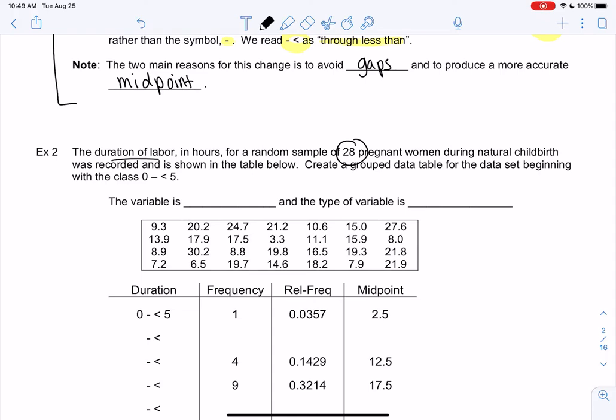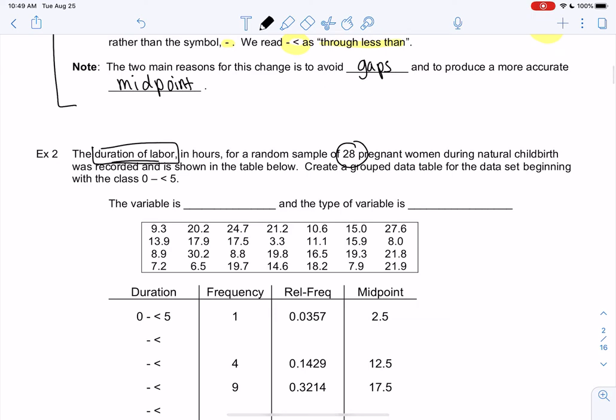First, our variable is the duration of the labor. That's what varies from person to person, that's what we're measuring. The difference in this one compared to the previous example is that the data is continuous. Labor doesn't have to be a full exact hour, it could be a half hour or 15 minutes. It doesn't jump from hour one to hour two to hour three, there's no gaps, it's continuous.